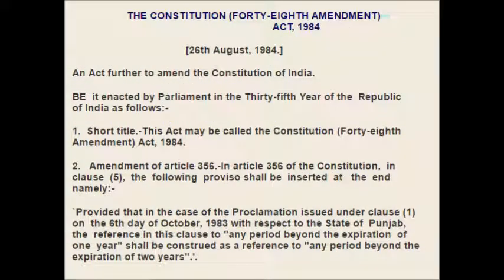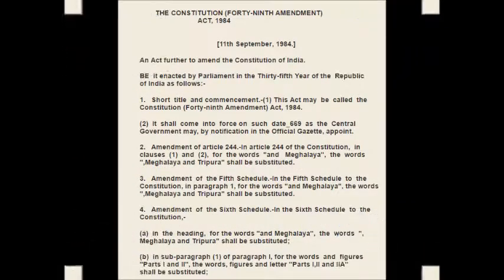The 48th Amendment in 1984 was passed with a view to extending president's rule in Punjab for a further period of 6 months after October 5th, 1984. When the proclamation of emergency was due to expire under Article 356 of the constitution, the president's proclamation could not remain in force in Punjab for more than one year unless the special conditions mentioned in clause 5 of Article 356 were satisfied. As a result of this amendment, these conditions became inapplicable to the state of Punjab.